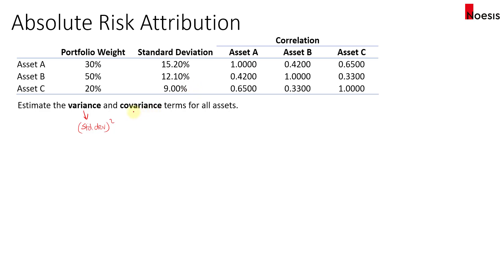But what about the covariance? How is covariance related to correlation? Correlation between A and B, for example, is equals to the covariance of A and B divided by the standard deviation of A and the standard deviation of B. So if I work this out, the covariance of A and B would be equals to the correlation of A and B multiplied by the standard deviation of A and the standard deviation of B. That's what we need to do for each of these assets if you do not have the covariance to start with.